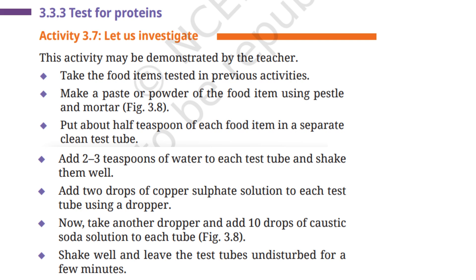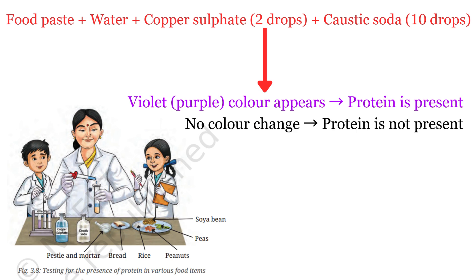Test for proteins — Activity 3.7. Take the food items tested in previous activities. Make a paste or powder of the food item using pestle and mortar. Put about half a teaspoon of each food item in a separate clean test tube. Add 2–3 teaspoons of water to each test tube and shake them well. Add 2 drops of copper sulphate solution to each test tube using a dropper. Now take another dropper and add 10 drops of caustic soda solution to each tube. Shake well and leave the test tubes undisturbed for a few minutes. If the mixture turns violet or purple, it means protein is present.